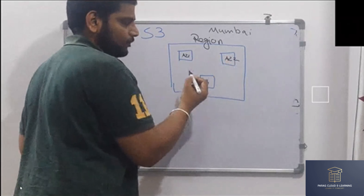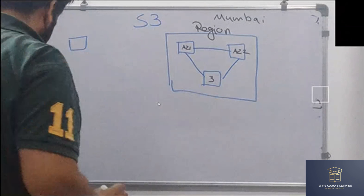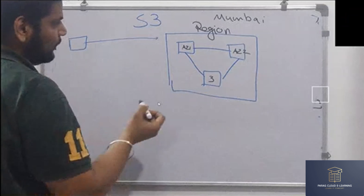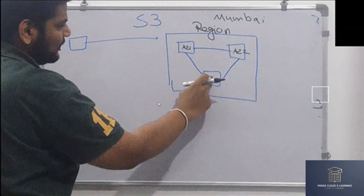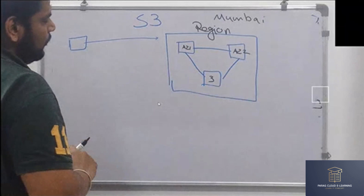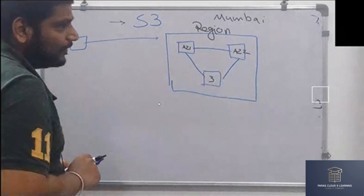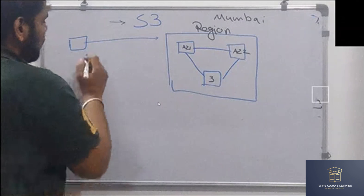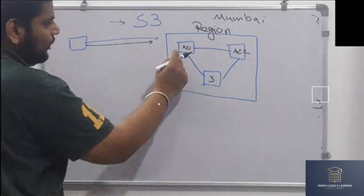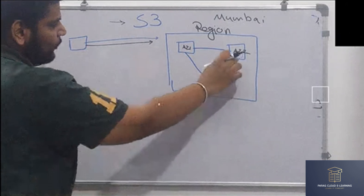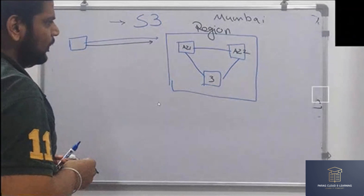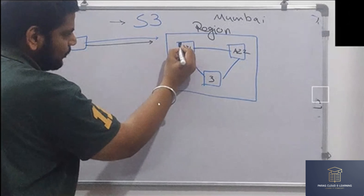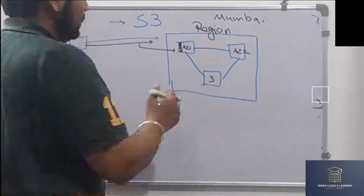All these availability zones are connected with each other. When you upload any file to an S3 bucket, your data will be uploaded into any one of these availability zones. When creating an S3 bucket, we are not selecting an availability zone — we are just selecting the region. So when you upload a file, Amazon will randomly select any availability zone and your file will be uploaded there.